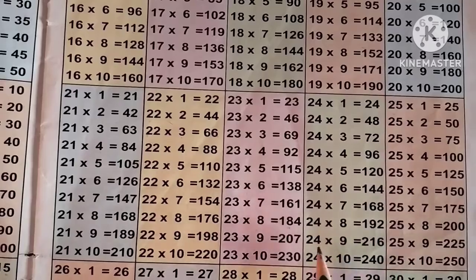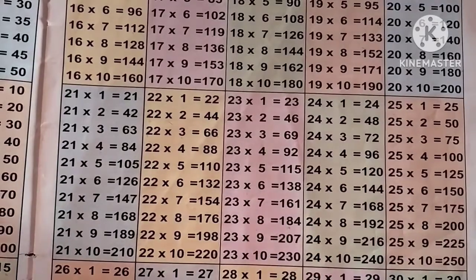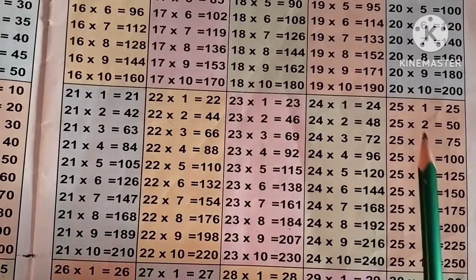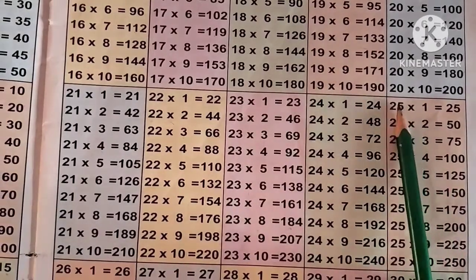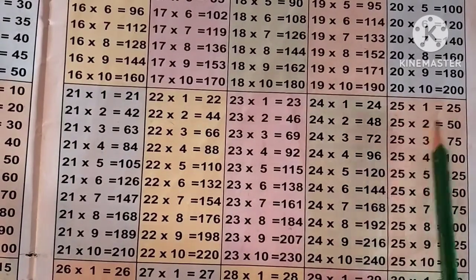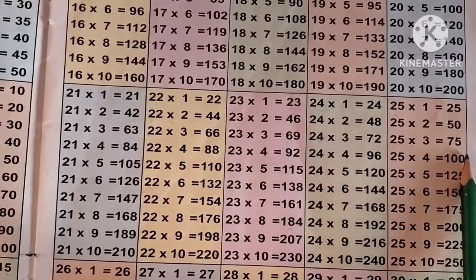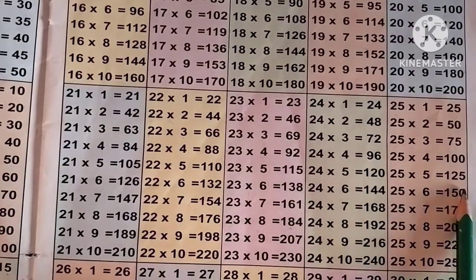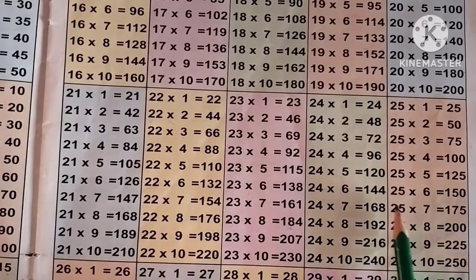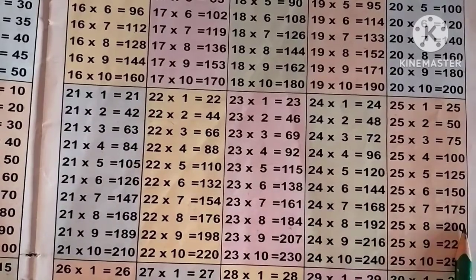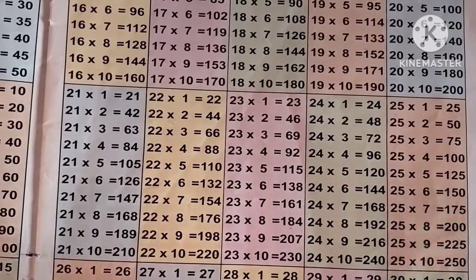Now the table of 25: 25 5s are 125, 25 6s are 150, 25 7s are 175, 25 8s are 200, 25 9s are 225, 25 10s are 250.